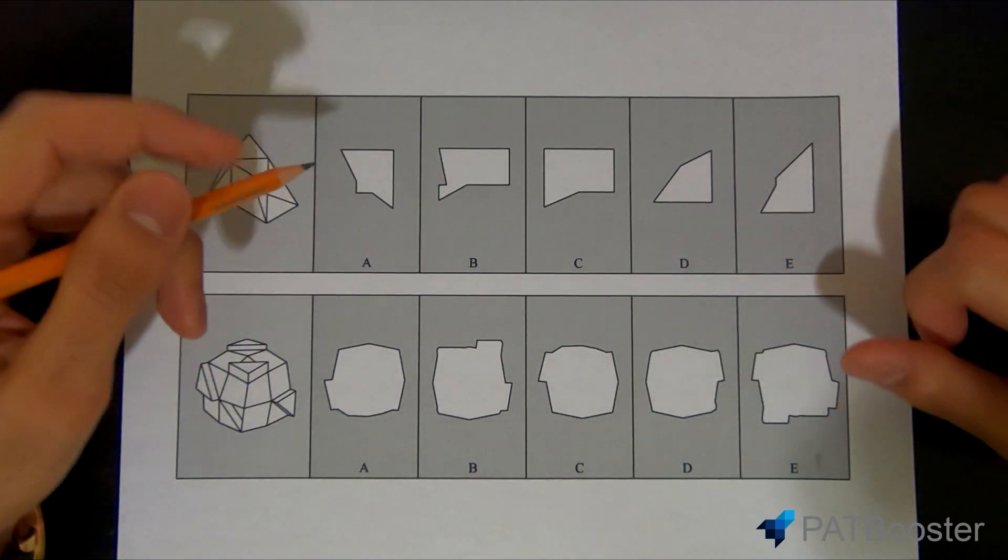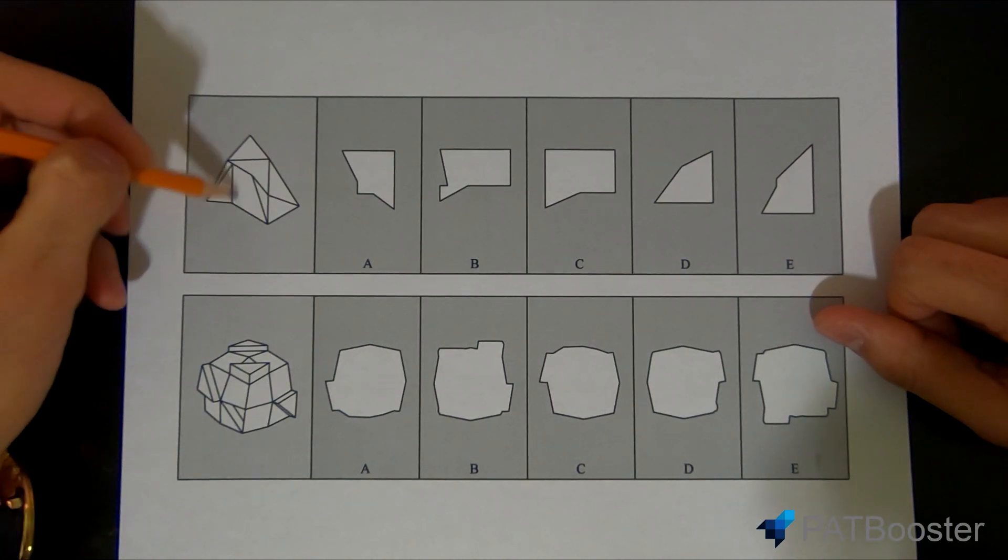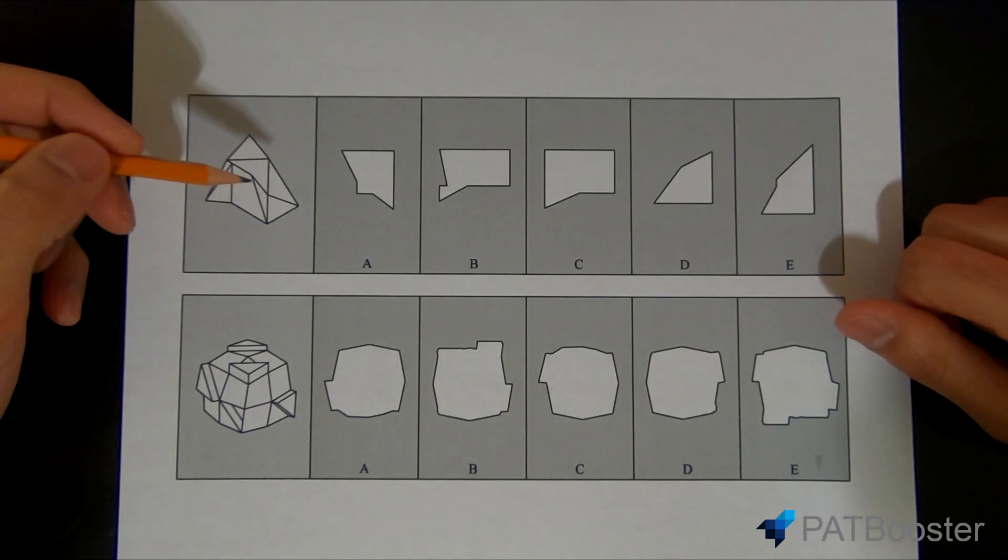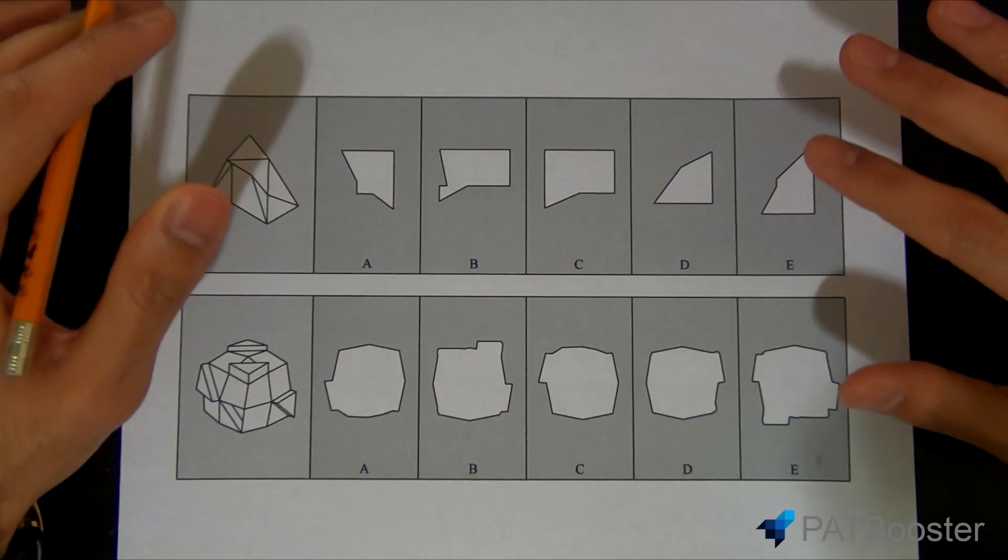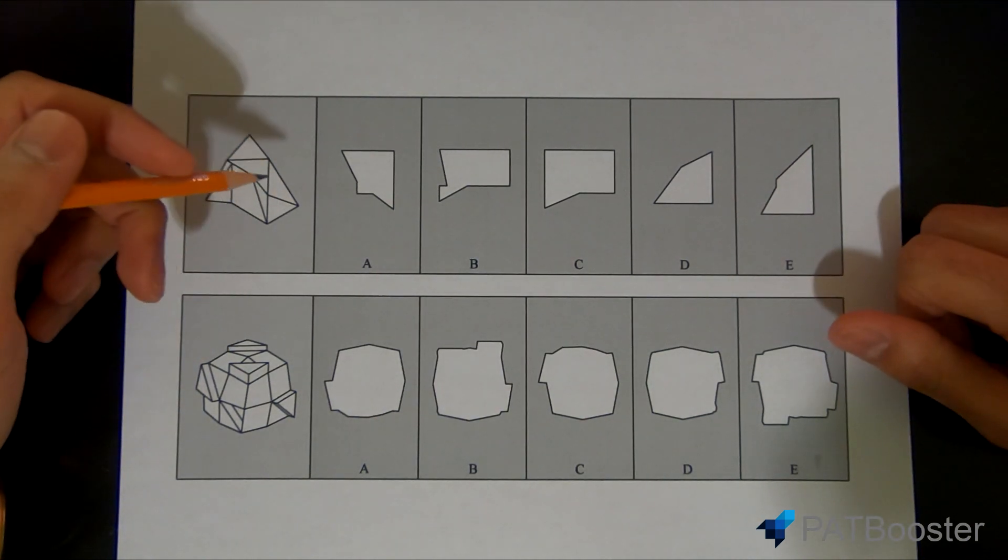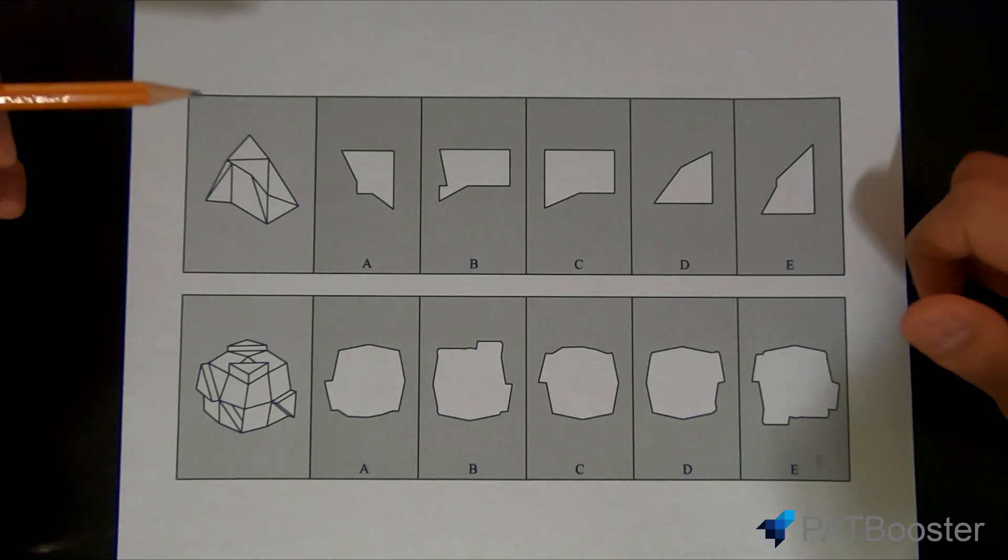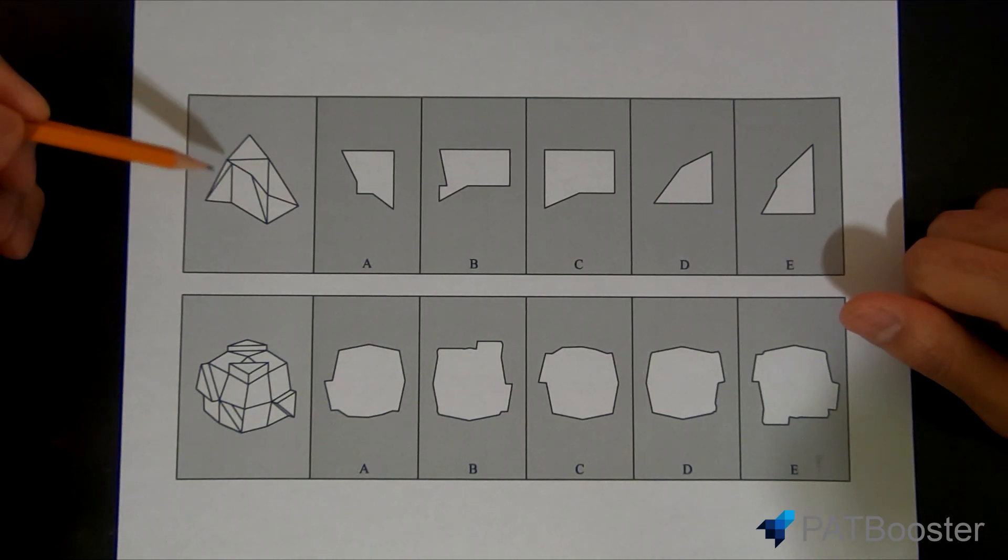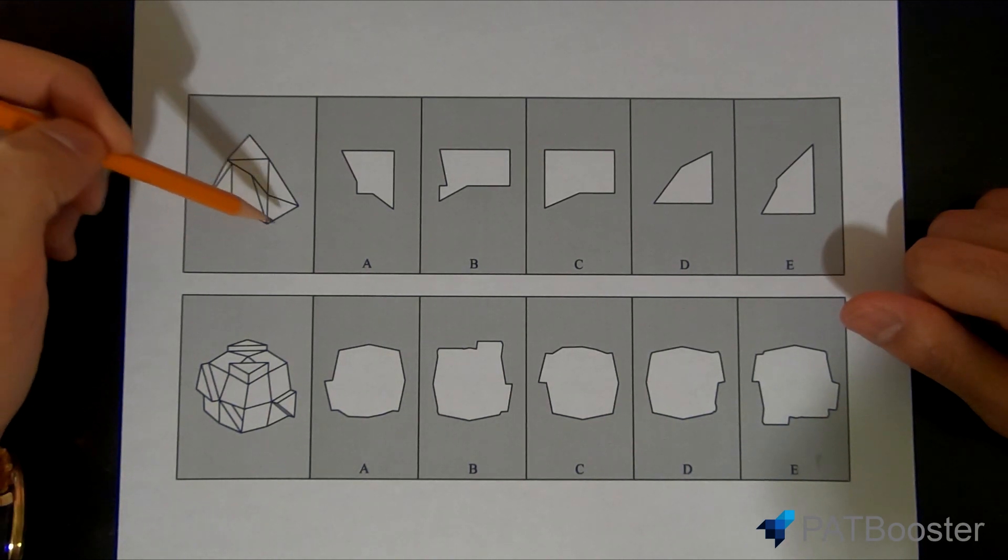Step two: scan the object for any apparent symmetry or hallmark features. Now this isn't meant to be very in-depth. I don't want you guys getting into the nitty-gritty details of the object. If you can't see the symmetry or hallmark feature within the first few seconds of looking at it, you shouldn't bother. Just move on to step three. For this top question, the only thing that sticks out to me is maybe this triangular extension here. I can't really make sense of what's going on here, so I'll just leave that.